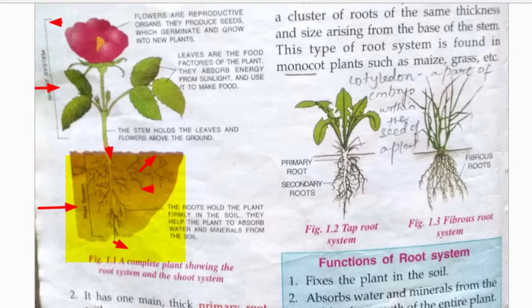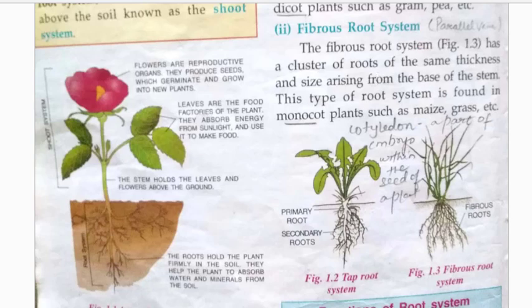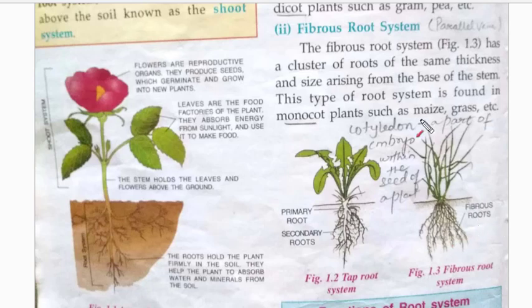There are two main types of roots: fibrous root system and tap root system. In a fibrous root system, roots arise from the base of the stem in clusters of almost the same thickness — they arise in bunches. This type of root system is found in monocot plants such as maize and grass. Monocot plants are plants which have only a single seed.